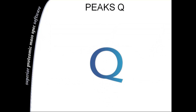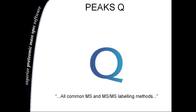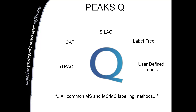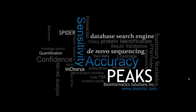PEAKSQ is an optional quantification tool that quantifies proteins using all common MS and MS-MS labeling methods. These methods can include iTRAQ, ICAT, SILAC, LabelFree, and other user-defined labels. Thank you for watching our overview video of PEAKS.